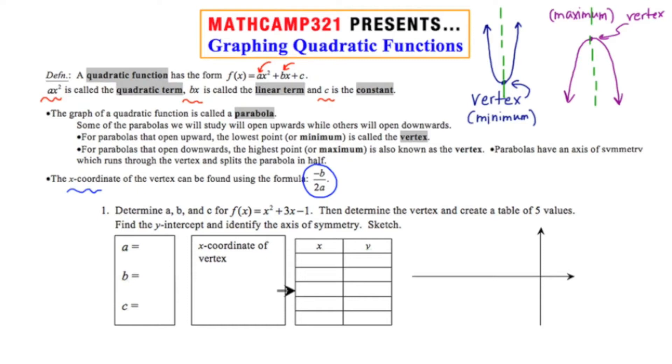Let's start by identifying a, b, and c. Now a is the quadratic coefficient, so in this case that's going to be 1. B is the linear coefficient, and that's going to be 3. And c is the constant, or negative 1.